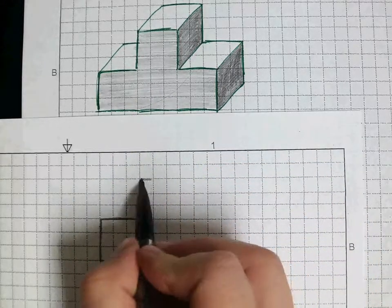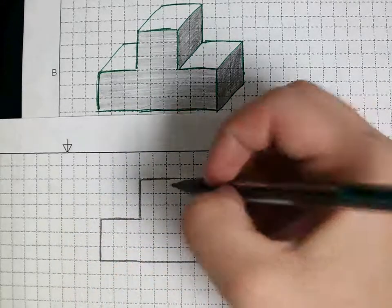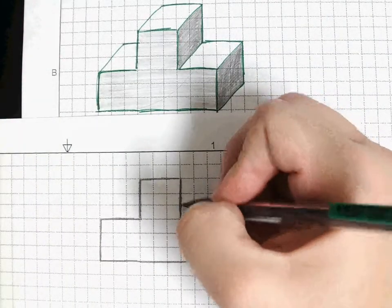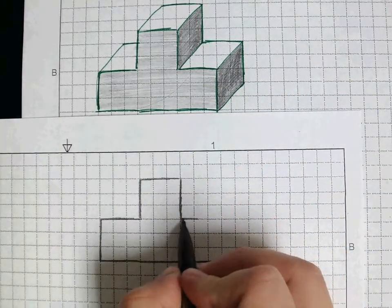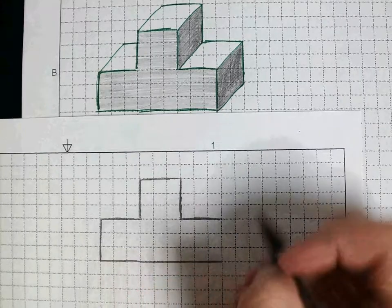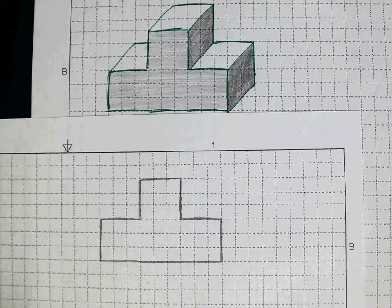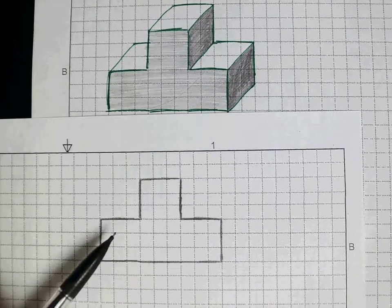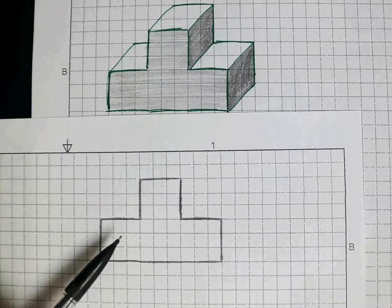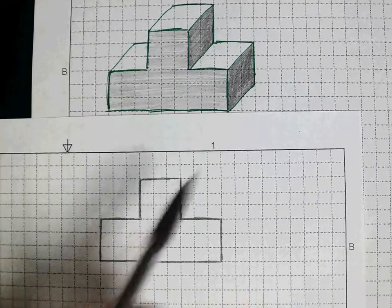Especially with oblique drawings, we really have that front face flat on our grid before we add our depth. So that's why we want to start with the front. So now we have this front shape right here. All we need to do next is add in our depth.